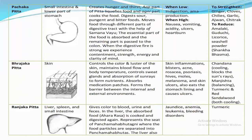Next is Bhrajak Pitta, located in the skin. Its actions include controlling color and lustre of the skin, maintaining blood flow and body temperature, controlling sweat glands, absorbing sun rays to form nutrients, absorbing medication patches, and forming the barrier between internal and external environments. Signs of imbalance include skin inflammation, blisters, acne, rosacea, psoriasis, abscesses, melanoma, and skin ulcers, as well as stomach lining ulcers. Balancing herbs include cooling herbs like Chandan (sandalwood), Manjistha, turmeric, and red sandalwood.